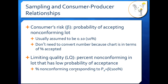Now let's talk about consumers. The consumer's risk, or beta, is the probability of accepting a nonconforming lot — the consumer receives a bad lot where the sample indicated it was good. Consumer's risk is usually assumed to be 0.1 or about 10%. You don't need to convert this because your chart is already in terms of percent accepted, so you're talking about 10% accepted by mistake. Do not subtract beta from 1 when doing your calculations for limiting quality (LQ). Your limiting quality is the percent nonconforming in a lot that has a low probability of acceptance — you might accept it by mistake based on your sample. The percent nonconforming at your LQ corresponds to the probability of acceptance of beta × 100%.